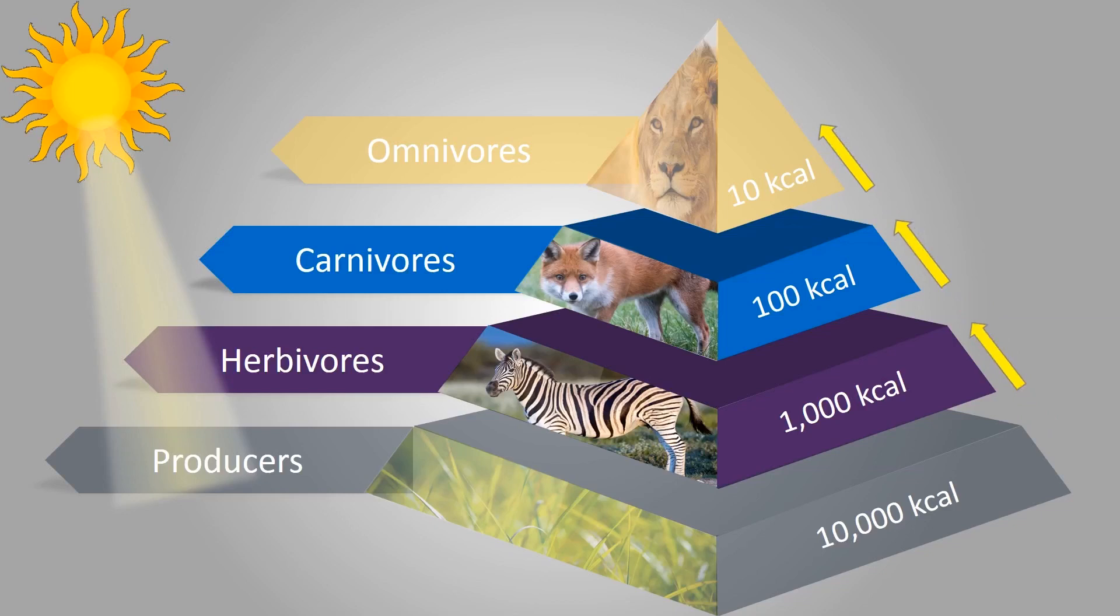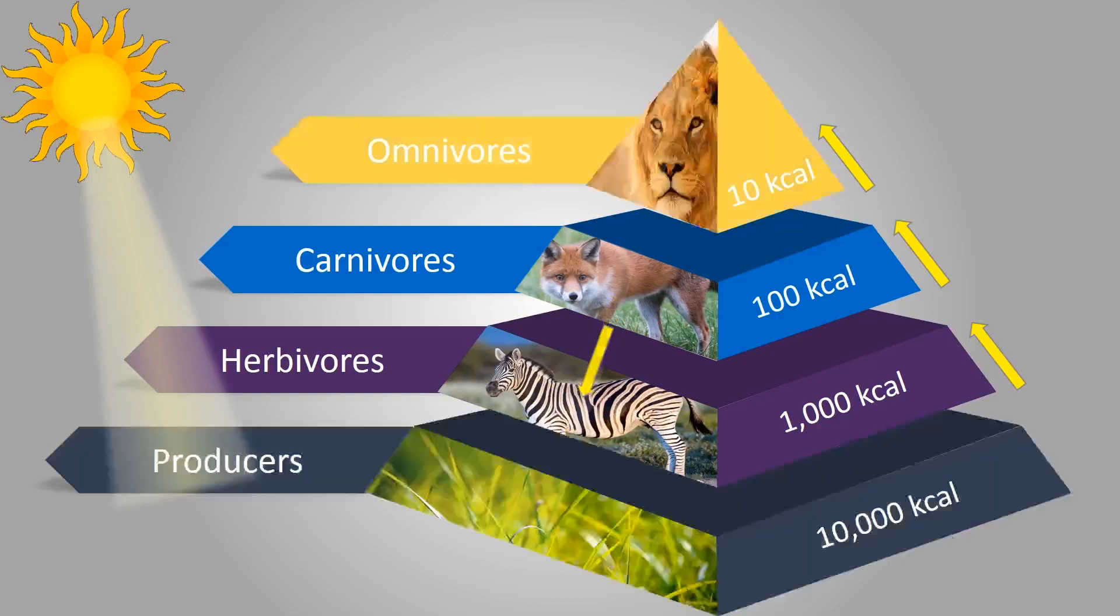As organisms at each trophic level fulfill their energy requirement from the organisms of lower trophic level. On average, only 10% of energy is transferred from one trophic level to another, while the rest is used for metabolic activities of individuals or is lost as heat energy. This pattern of energy exchanged in the ecosystem is called pyramid of energy.